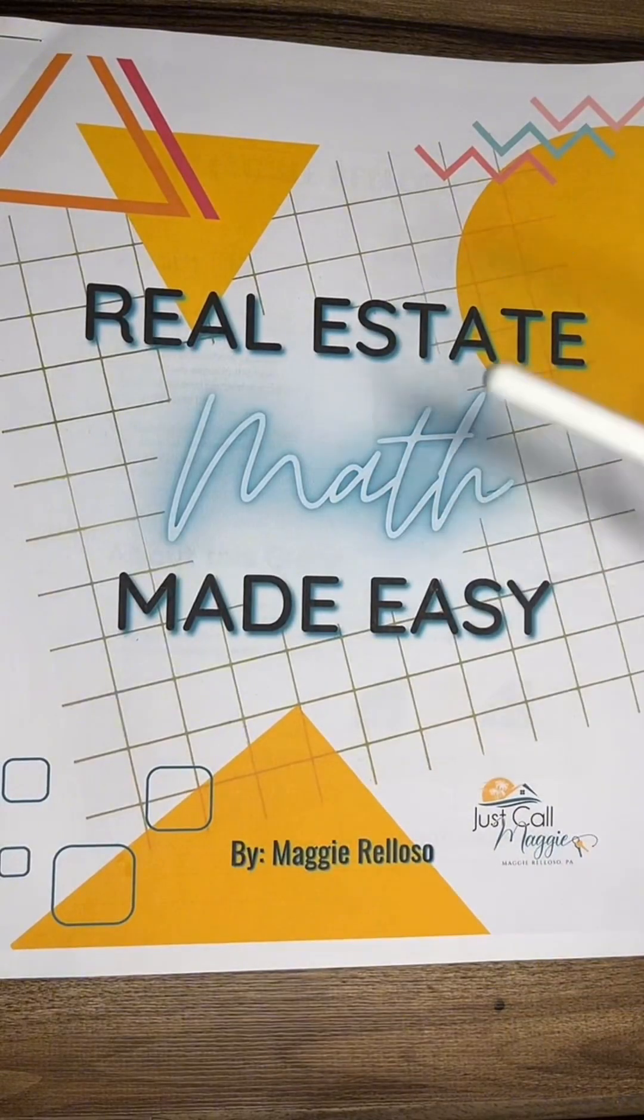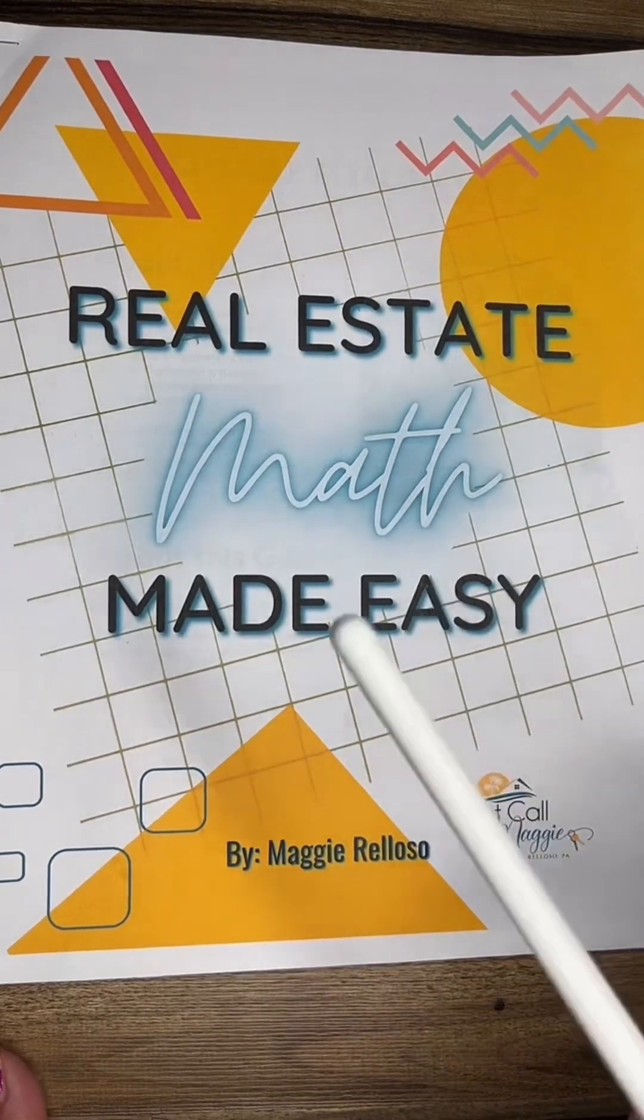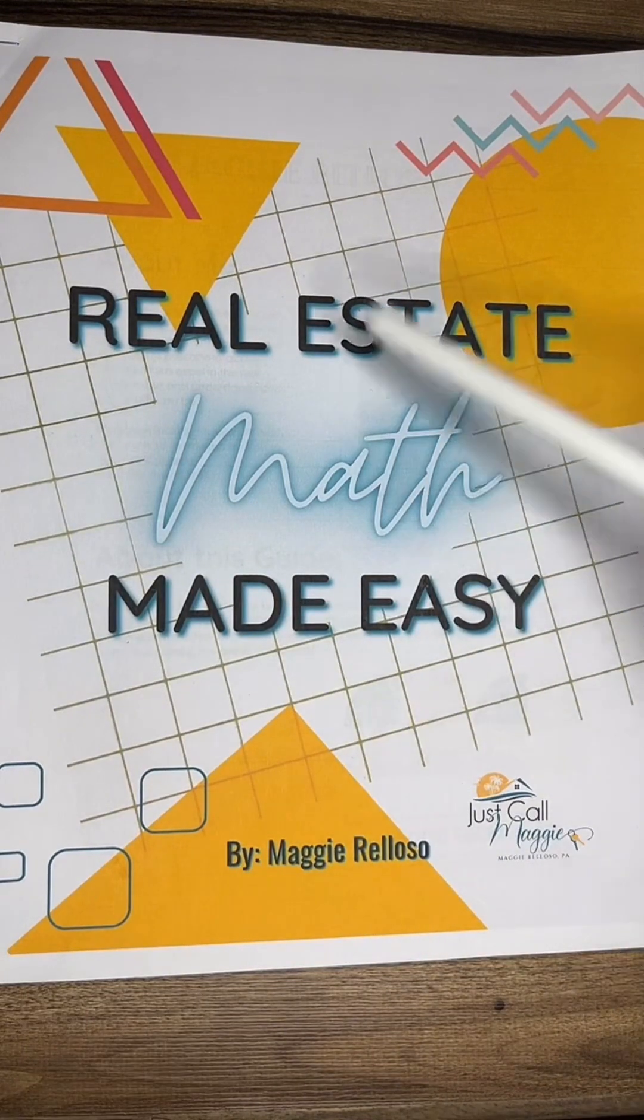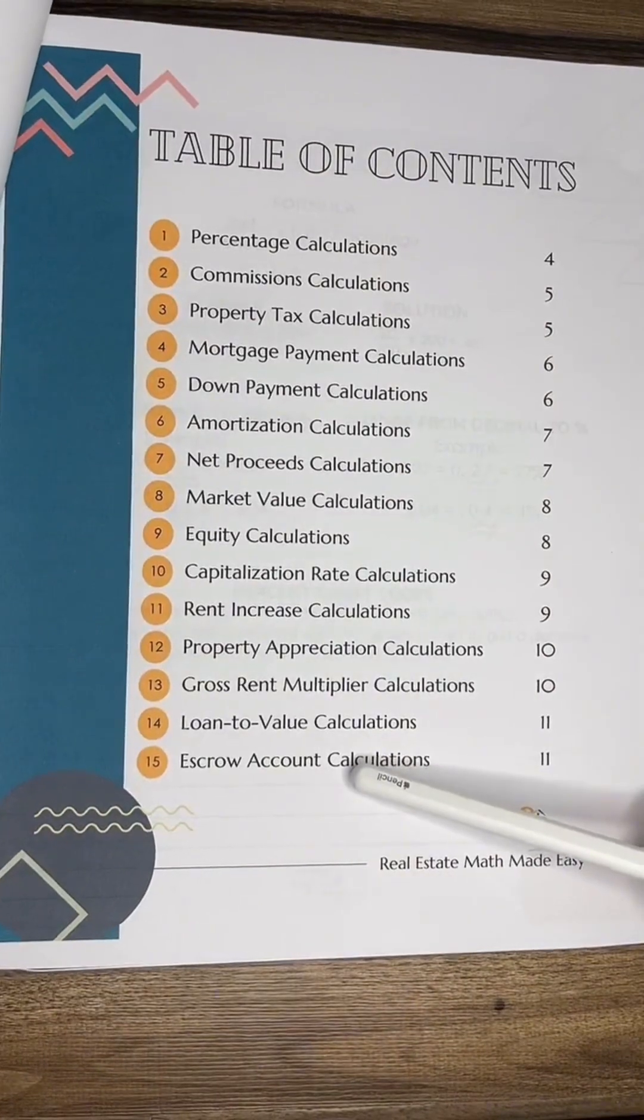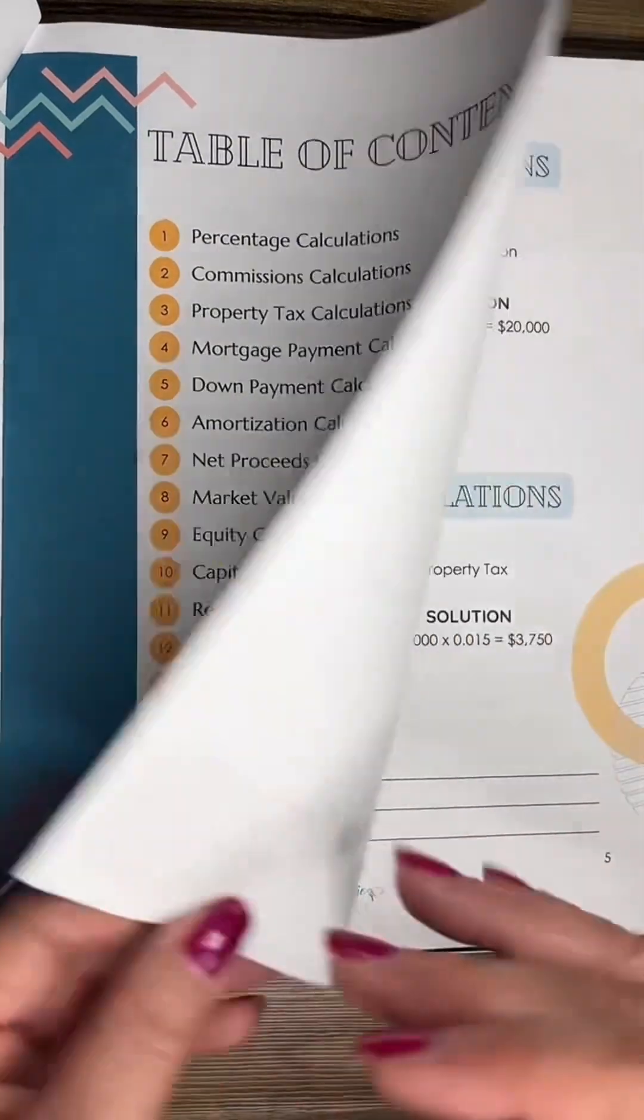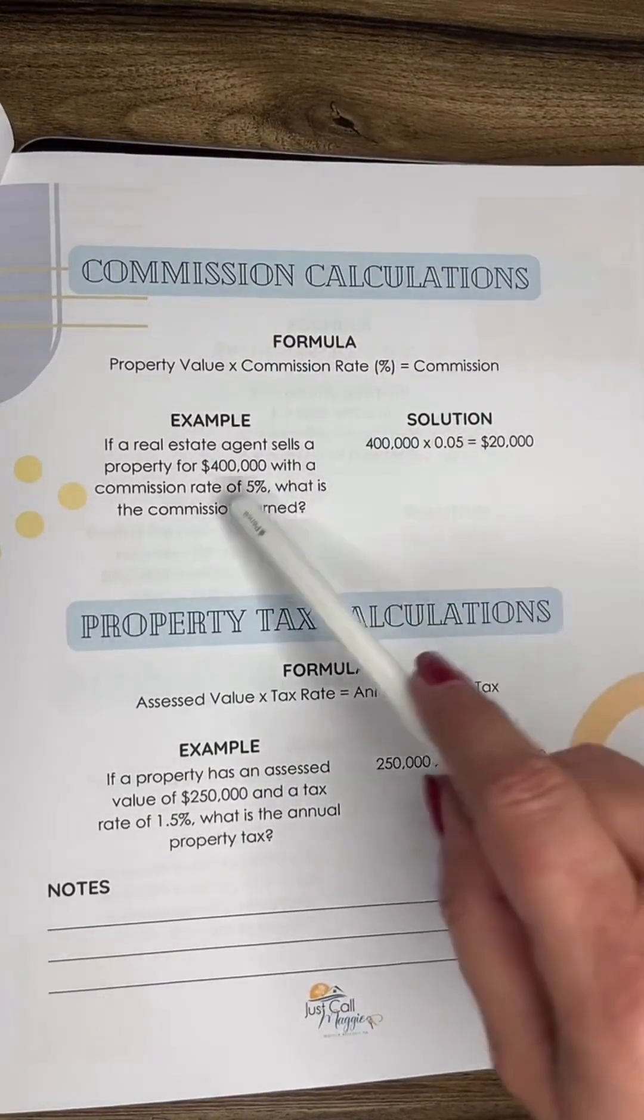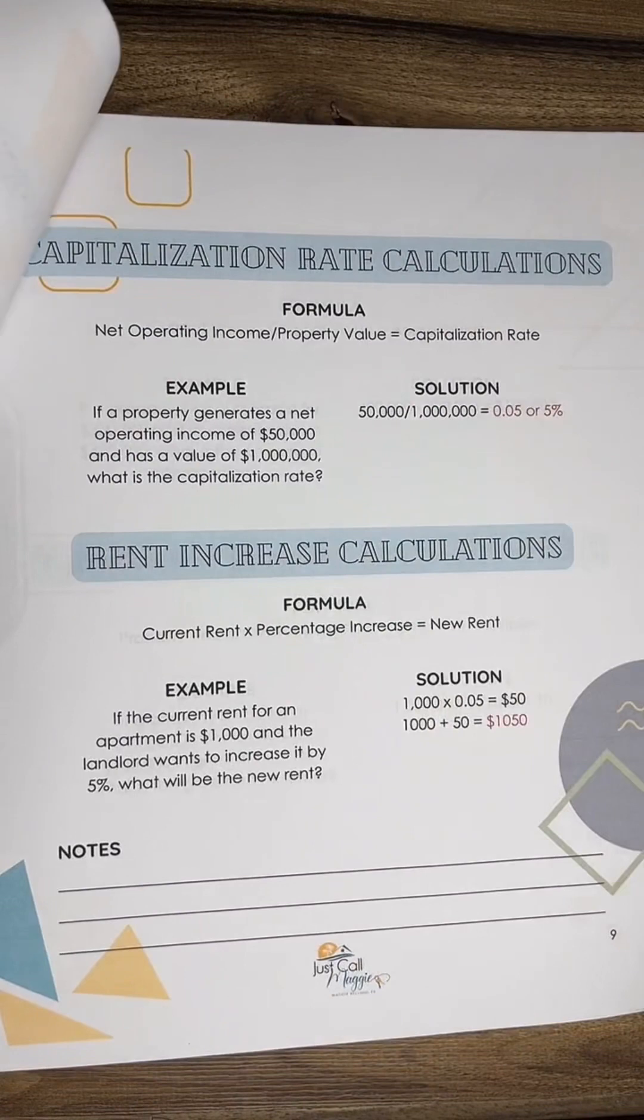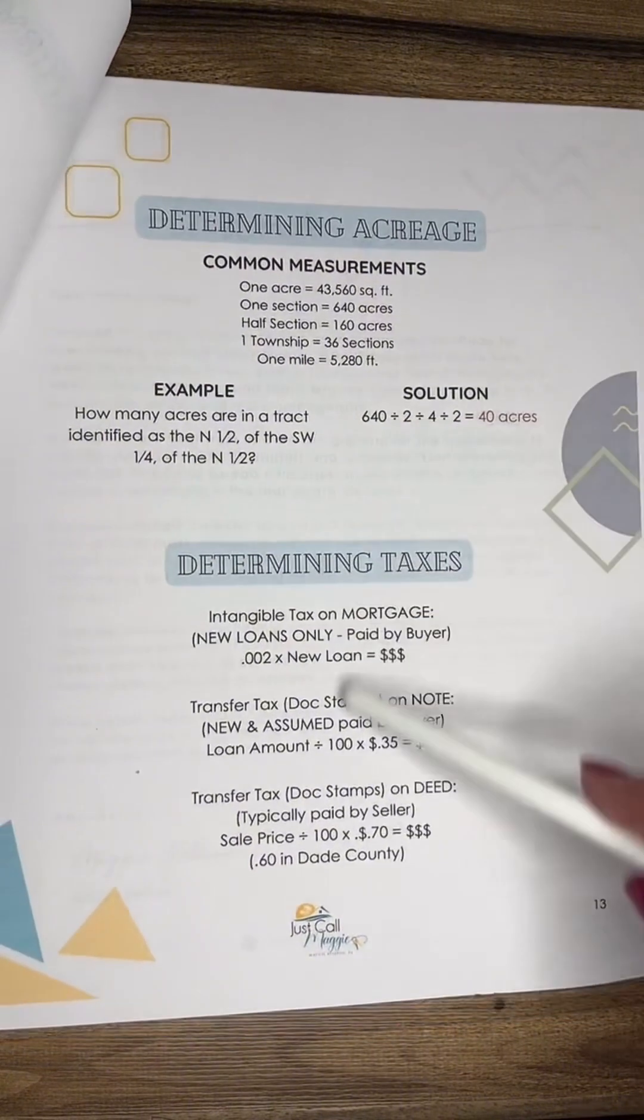This is a free study guide that I'm giving away to you guys. It's on my website. Go there now. The link is in my bio. It's justcallmaggie.com slash education. It is that link in my bio. You can go in here and get this study guide for free. It has over 30 different calculations and formulas that you're going to need for your state exam. For example, commission calculations. It gives you an example and the solution how to work it out. We have rent increase, cap rates. We have all kinds of formulas.